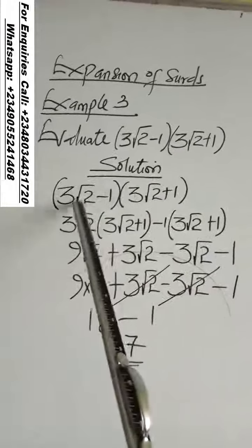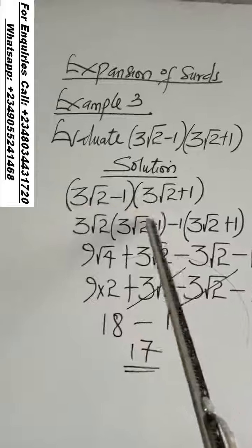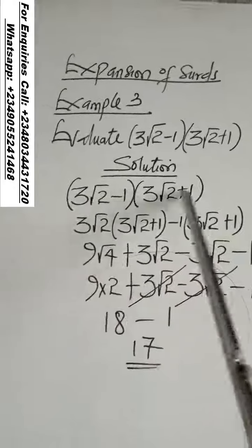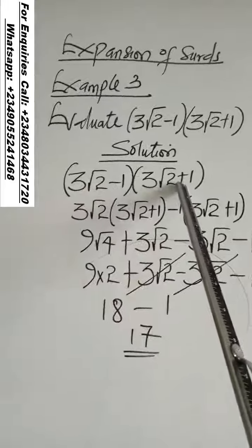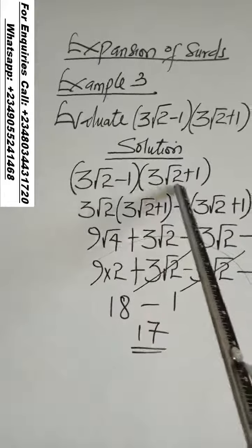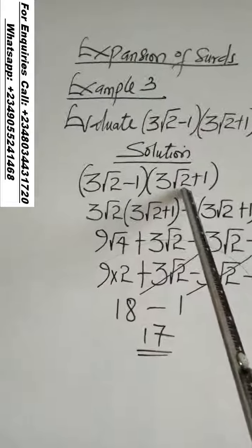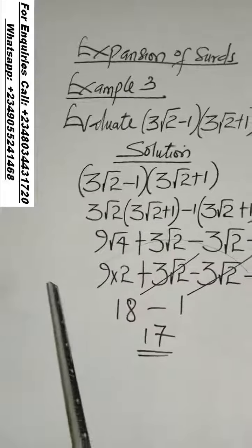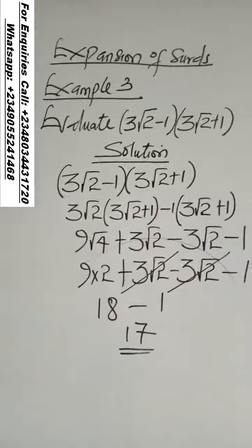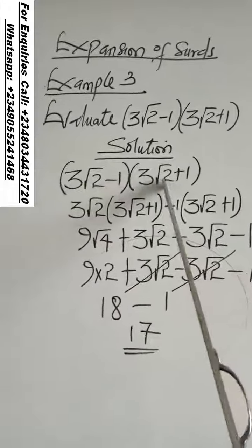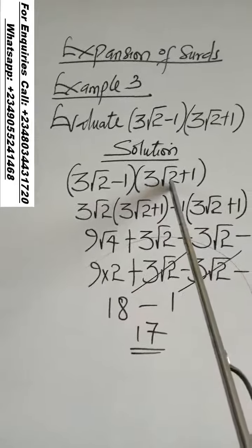Now, if you look at these two surds, they are conjugate. They are conjugate surds because the first one is minus and the second one is plus. The same value in the bracket, but different sign. So, since they are different signs, it means the two of them are conjugate. By the time you multiply two of them, it will no longer give you a surd.